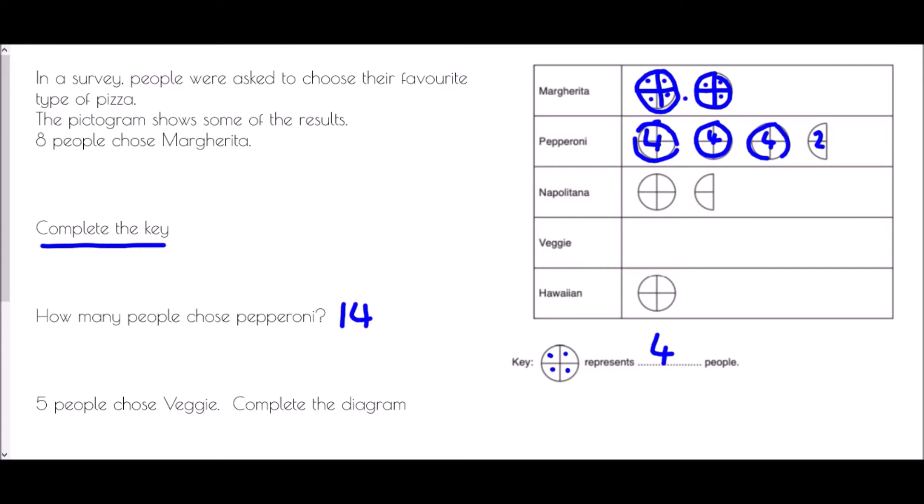We are then told that five people chose veggie. Complete the diagram. So what we need to do is now think what five people would look like in the same sort of diagram. Well straight away we know that a circle with a cross in the middle making four slices, that's four people. So then how would I get the extra one person? Well one person is only going to be one small piece of this diagram. And so I'm just going to draw a little quarter pizza to show that I've got my fifth person.